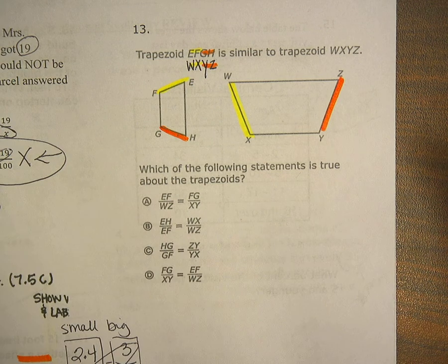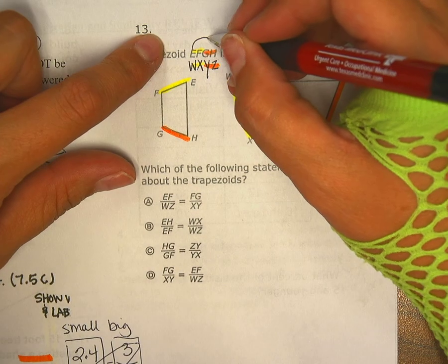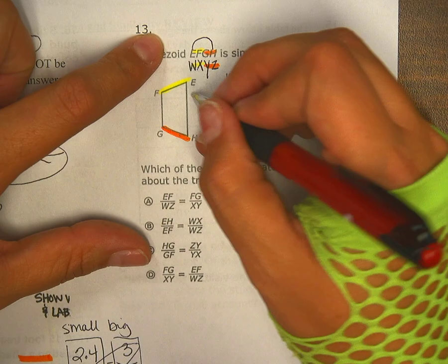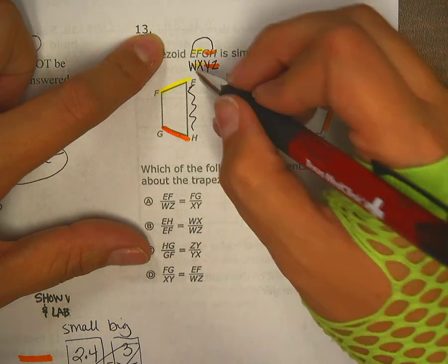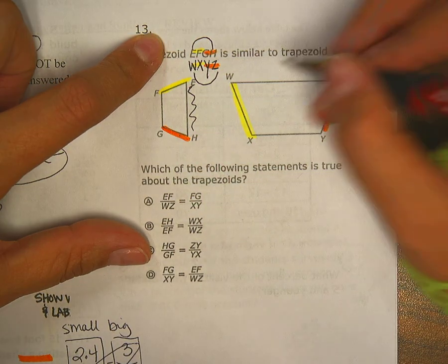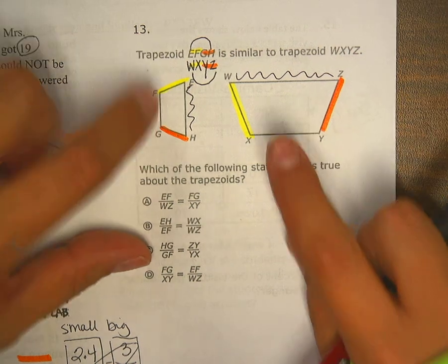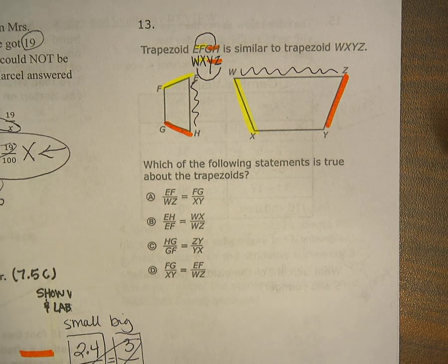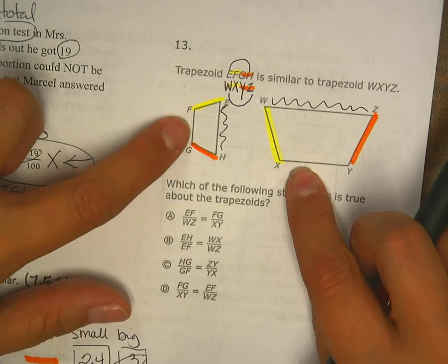And then I'm going to take my two ends, so E and H, and then W and Z. Then I'm leaving this one blank because I don't have another marker and because I can. The blank ones obviously match together.